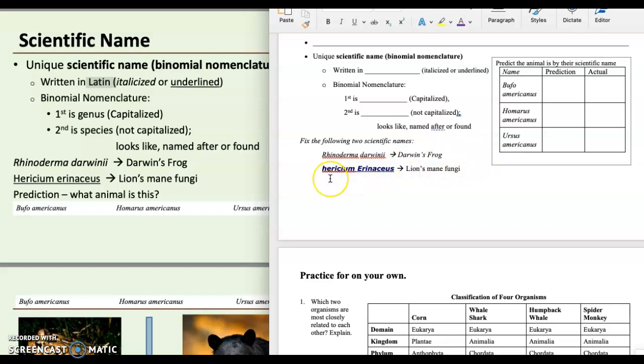What's wrong with this one? Hericium erinaceus. It's hard to pronounce this. This is the scientific name for lion's mane fungi. What's wrong with this one? It is a capitalization. This should be a capital H. And this should be a lowercase e. The other thing that's wrong with this one is it's both italicized and underlined. We don't need both. That's redundant. So let's just go with italicized because we are typing. So we're going to italicize that. There we go.